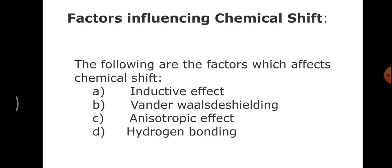Next we will see the factors influencing the chemical shift. The factors affecting chemical shift are: inductive effect, van der Waals shielding, van der Waals deshielding, anisotropic effect, and hydrogen bonding. Now let us see them one by one.